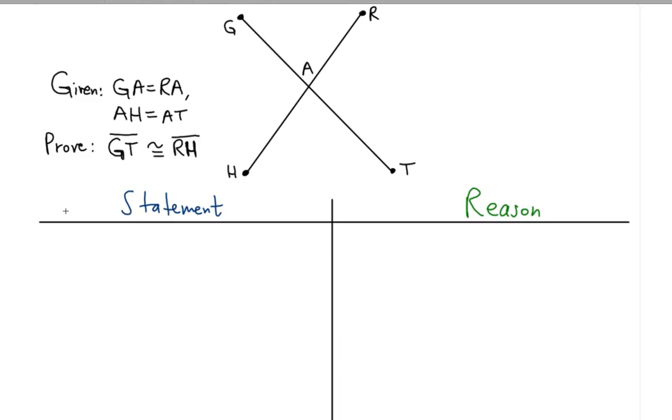The first thing is to write the given statements: GA is equal to RA, AH is equal to AT. This is given.